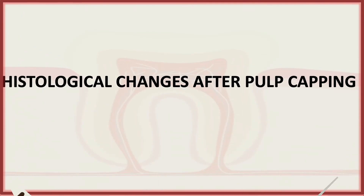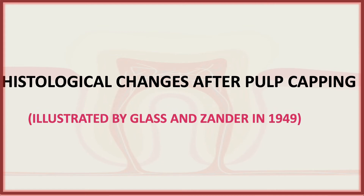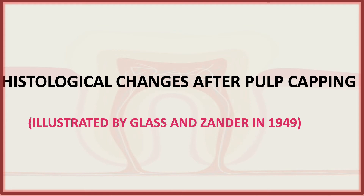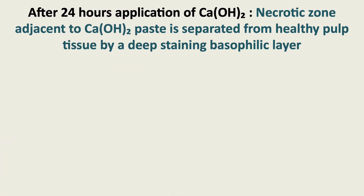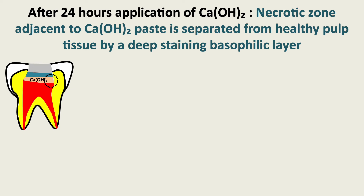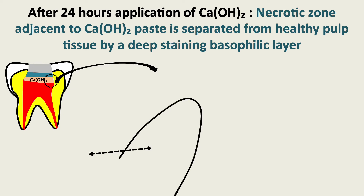All these are the histological changes after pulp capping. According to the article by Glass and Zander in 1949, what happens after 24 hours of application of calcium hydroxide: a necrotic zone adjacent to the calcium hydroxide paste is separated from the healthy pulp tissue by a deep-staining basophilic layer.